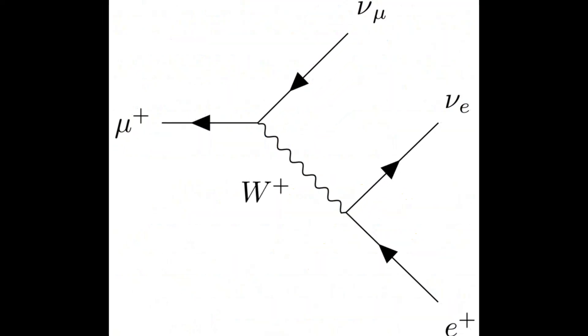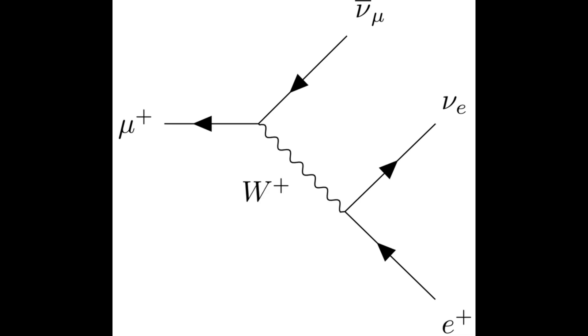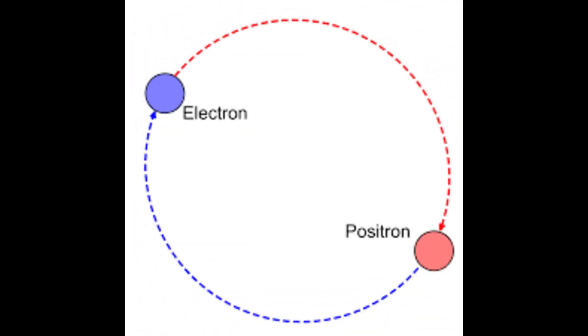Now, what would happen to this positron and electron? I know many of you expect them to annihilate and release energy, but it is also possible for them to form a bound state called positronium before they eventually annihilate.